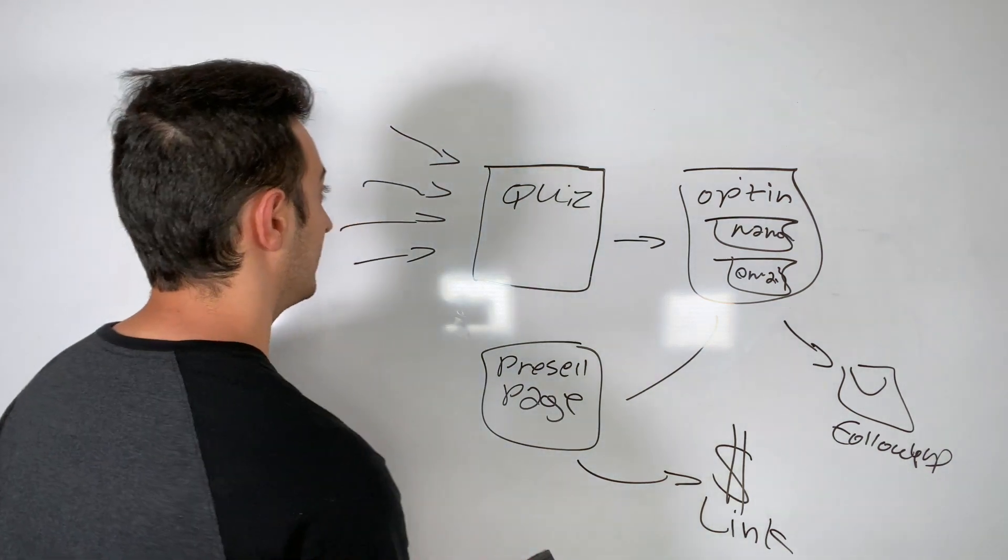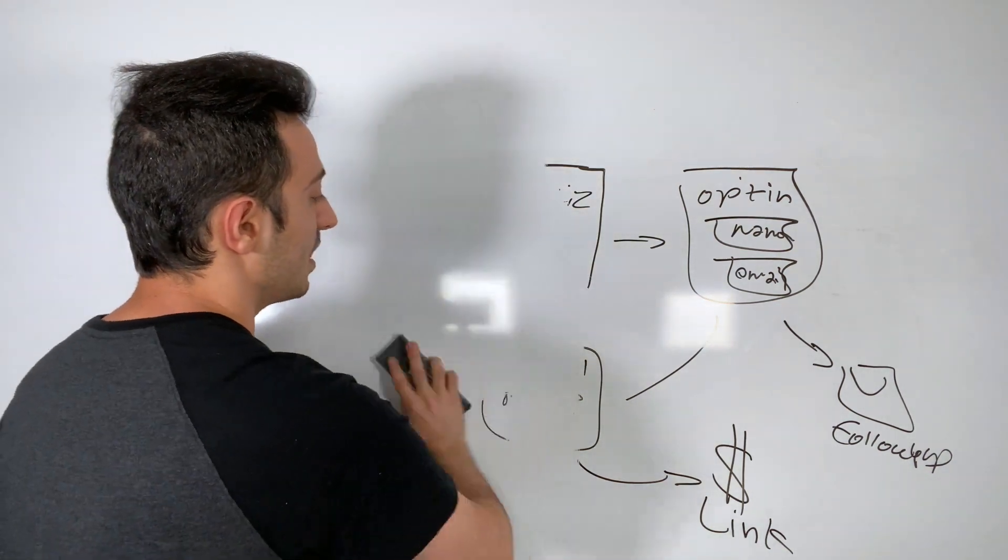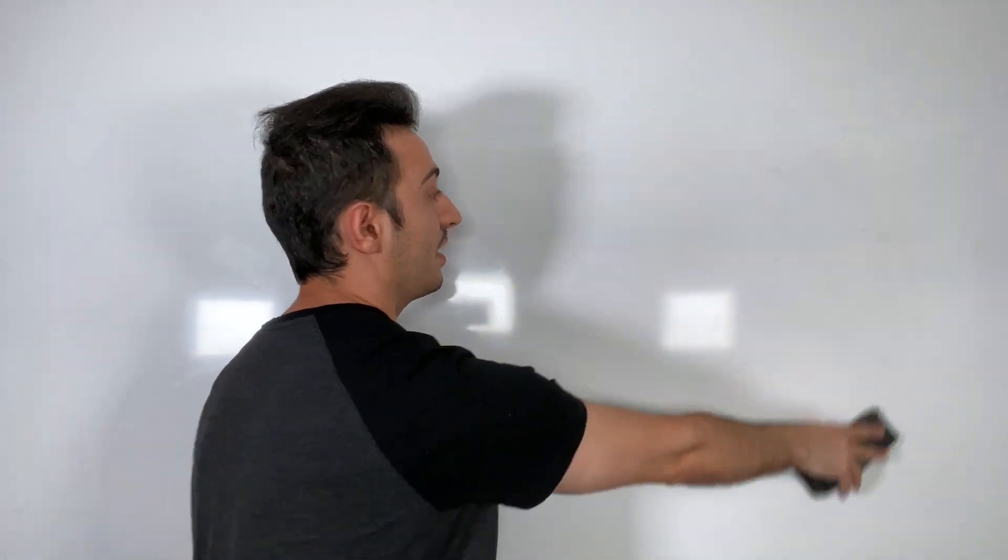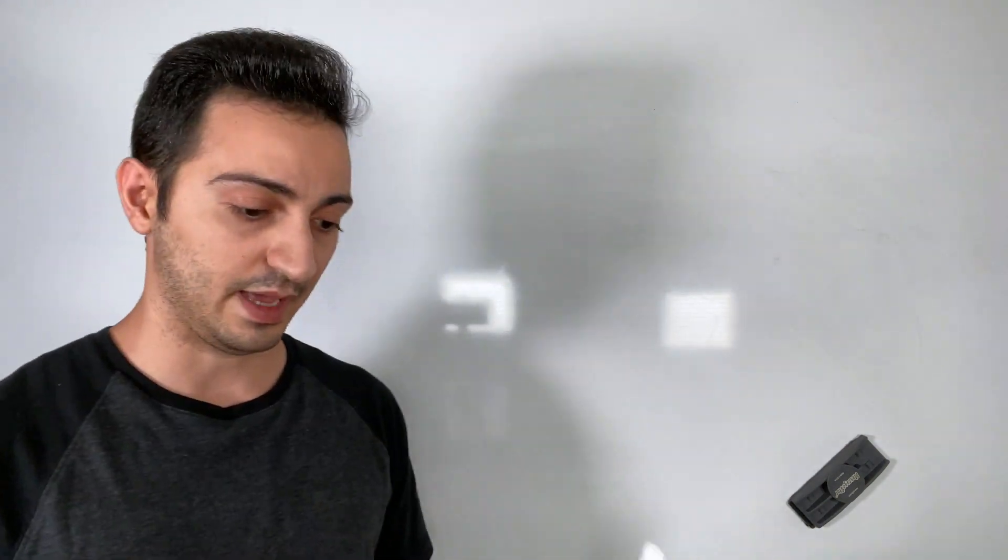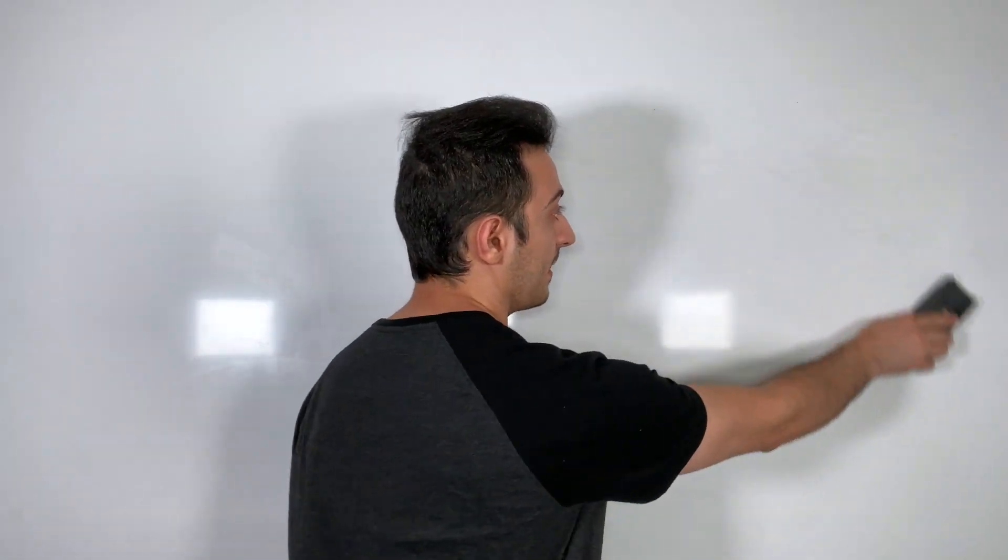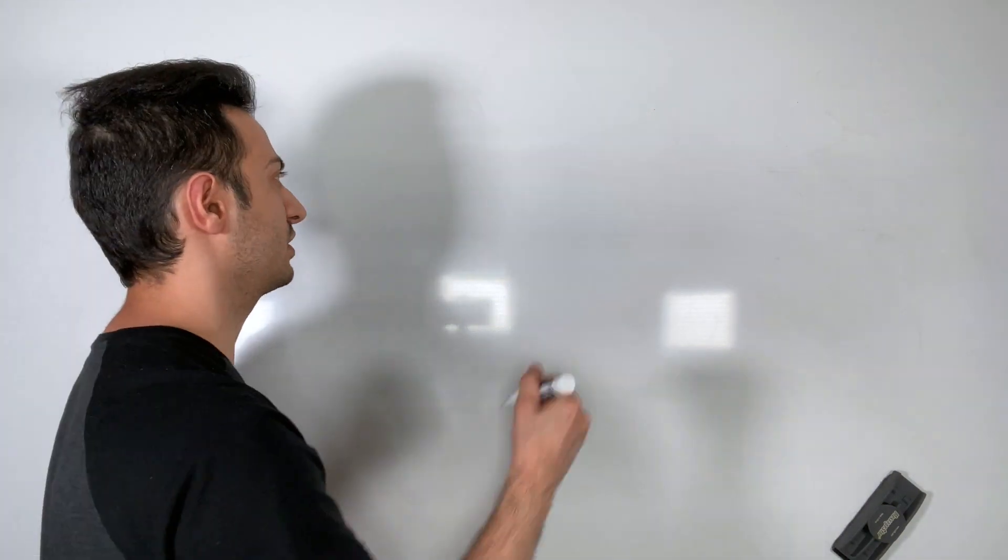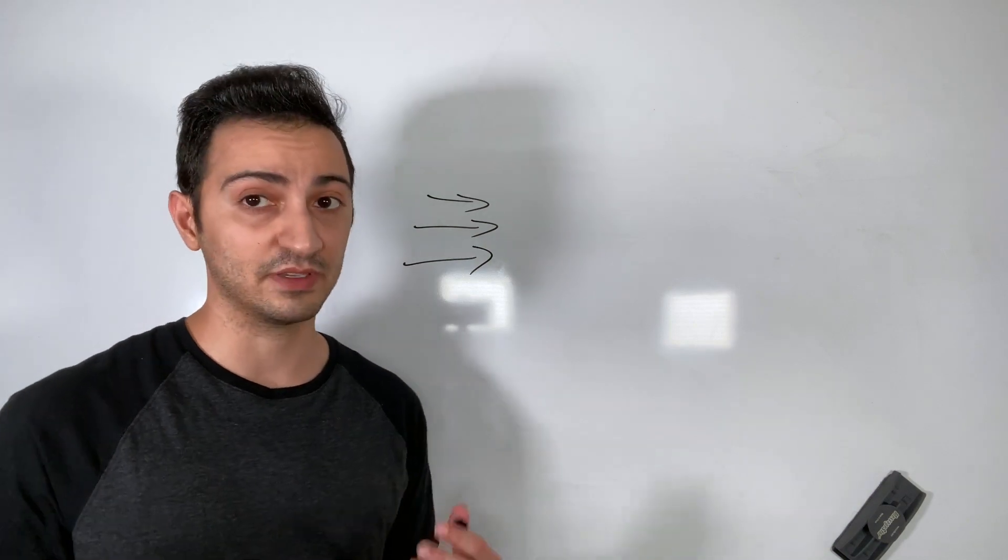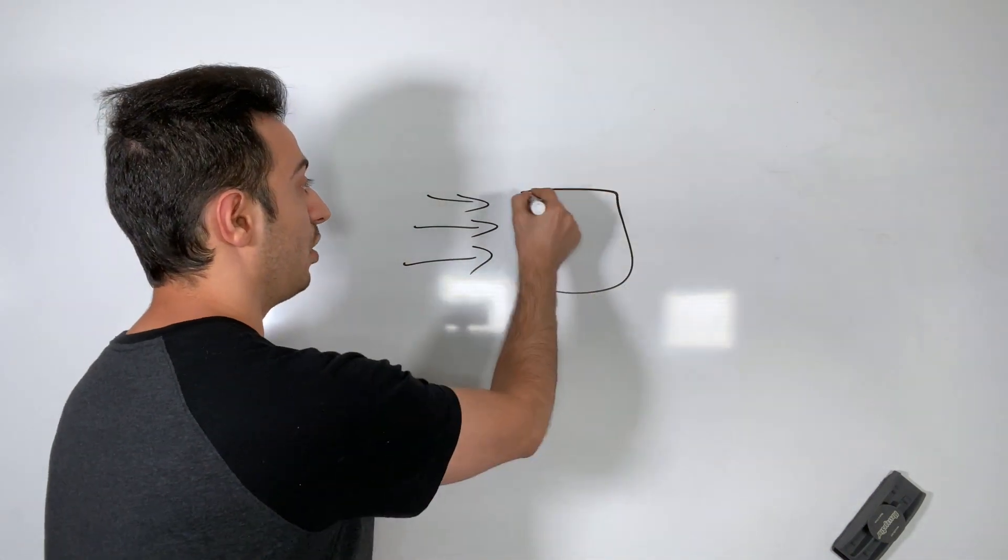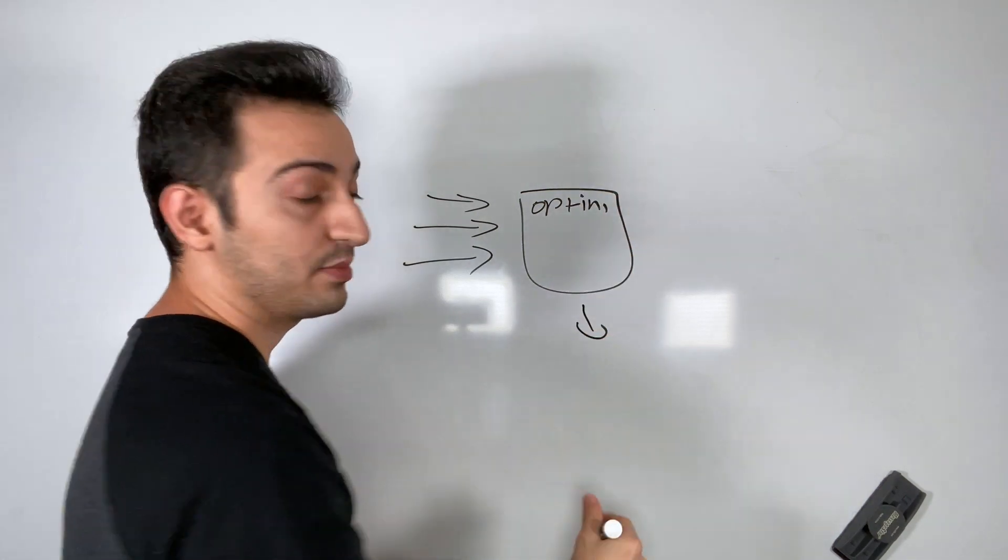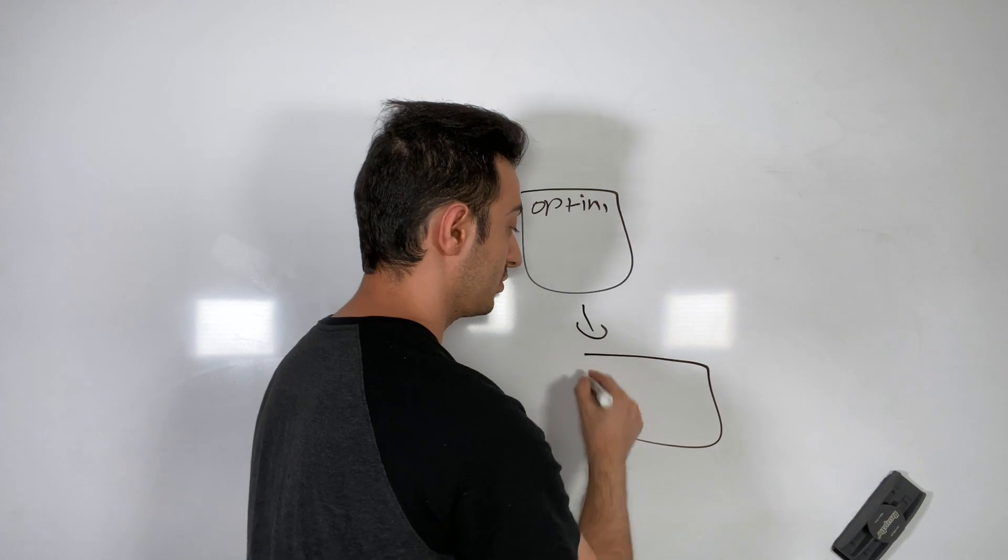So the funnel I actually want to talk about, this was one of the funnels that I used, I still do, to sell a program. There is a program on ClickBank that is a $1,000 product, the commission is $500. So the way I sell it personally is I'm going to make a separate video for this, but I drive traffic from different sources, usually my main paid traffic source is Bing. So I drive traffic to an opt-in page.